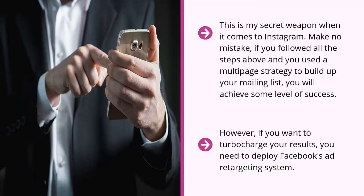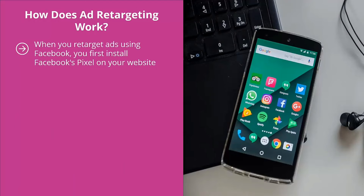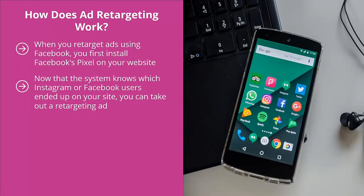How does ad retargeting work? When you retarget ads using Facebook, you first install Facebook's pixel on your website. You then go about promoting on Facebook and Instagram, and when people find themselves on your site after clicking on a profile link, the pixel keeps track of where they landed. The system now knows which Instagram or Facebook users ended up on your site, and you can take out a retargeting ad.